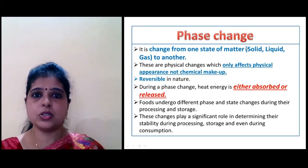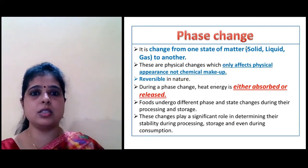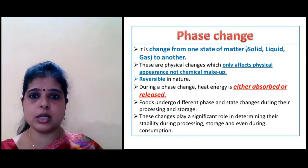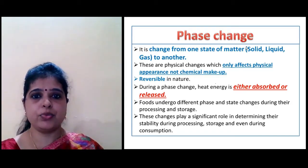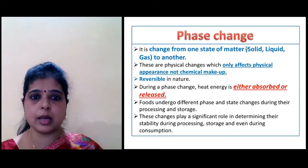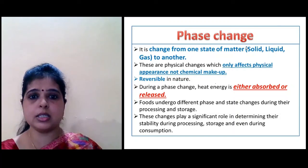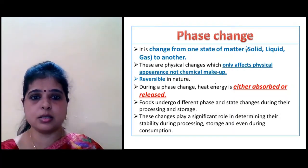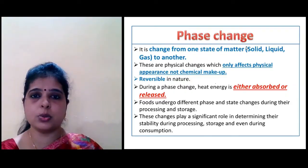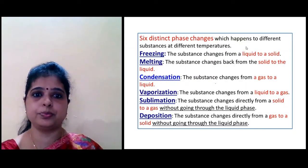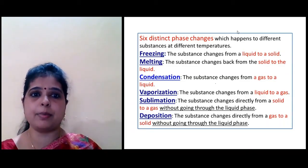Next is phase change. Phase change is the change from one state of matter to another. These are physical changes which only affect physical appearance, not chemical makeup. During a phase change, heat energy is either absorbed or released. Food undergoes different phases and phase changes during processing, and this plays an important role in determining stability during processing, storage, and even consumption.